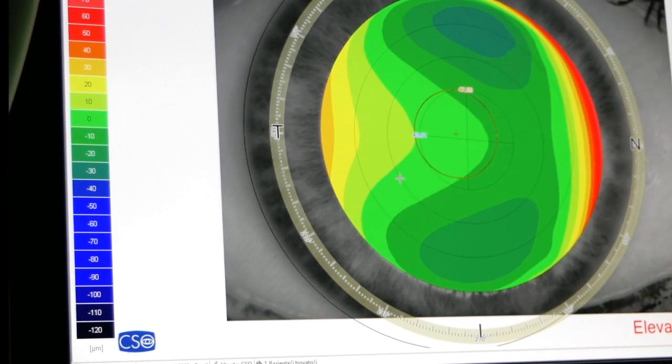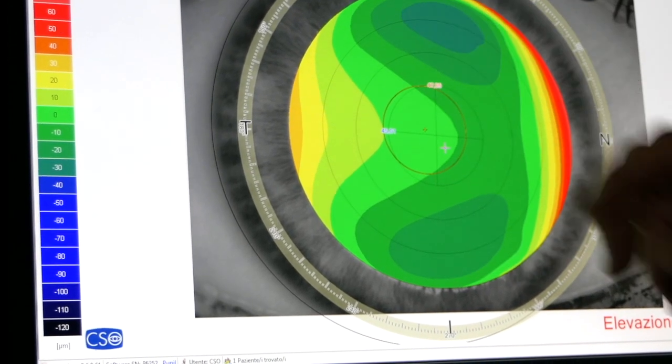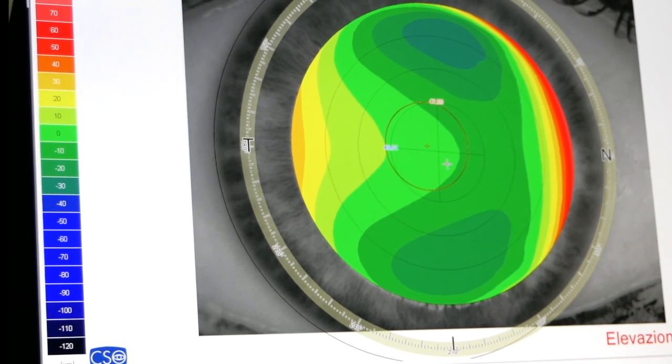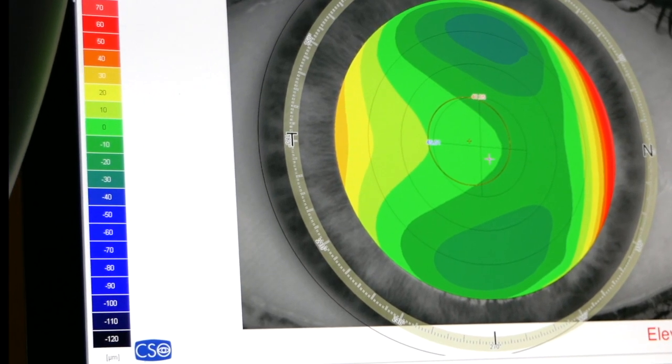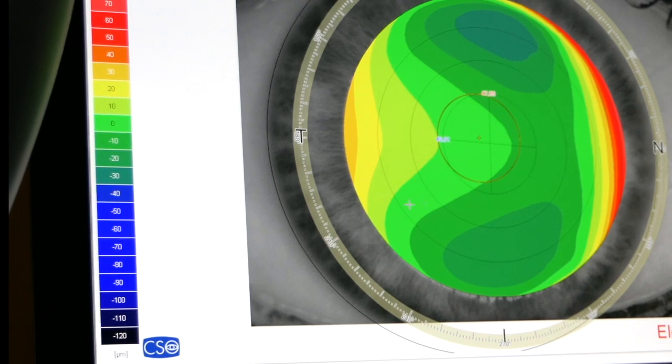It puts this sphere ideally resting on the cornea and draws everything that comes over the ideal cornea in red colors, and everything else that comes under the ideal cornea in blue values.